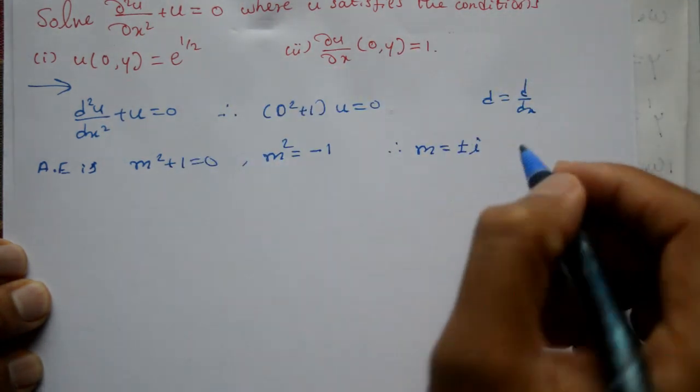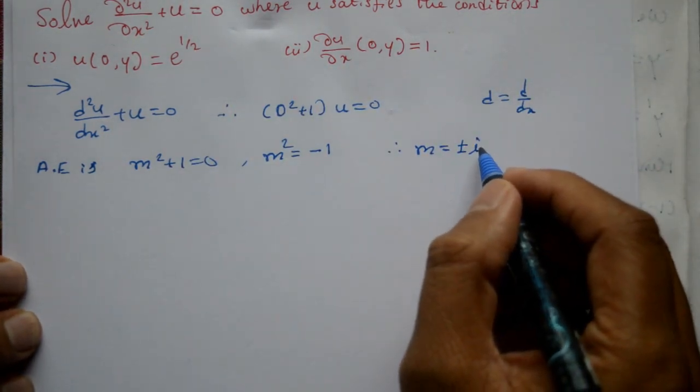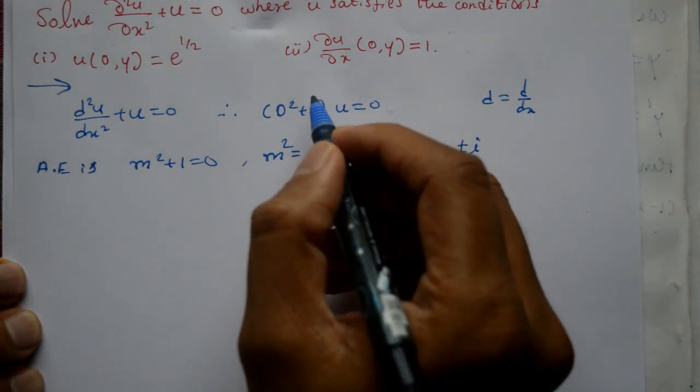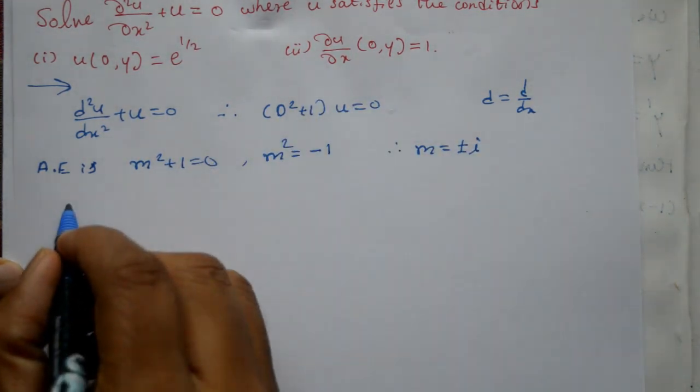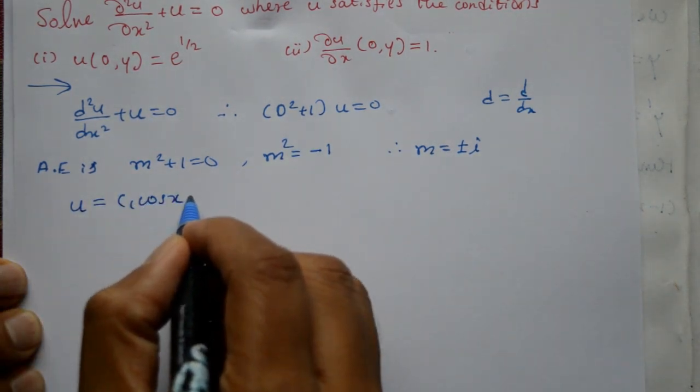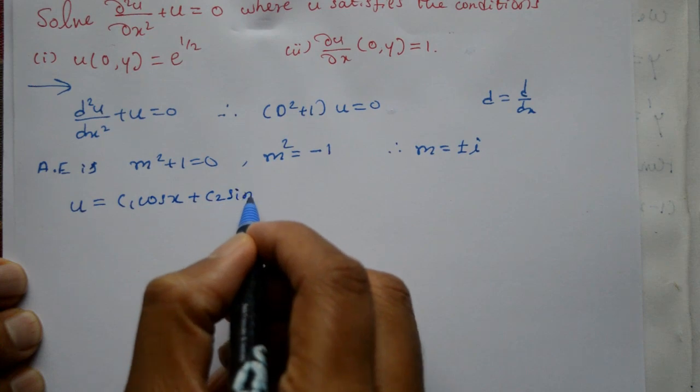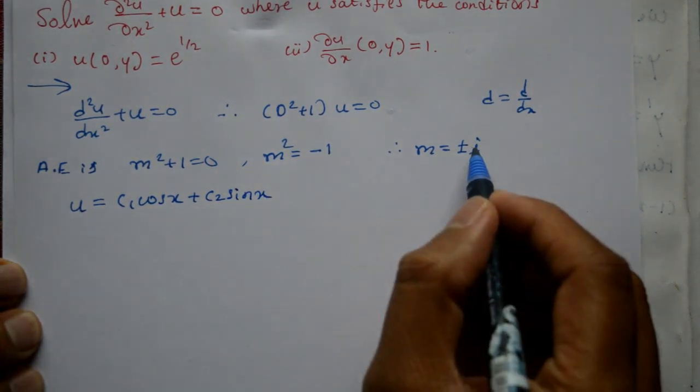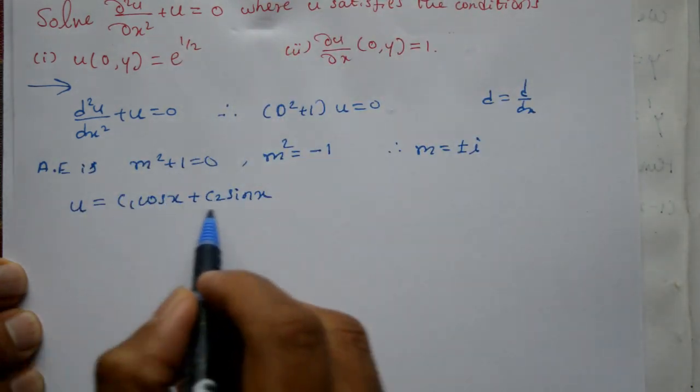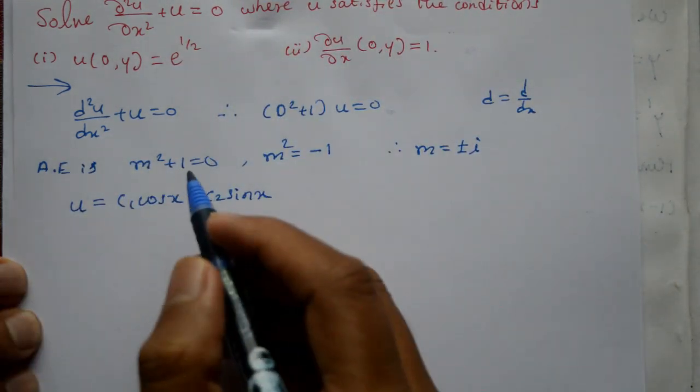√(-1) gives complex roots. Alpha is 0, beta is 1. The solution of ordinary differential equation is given by: u = c₁·cos(x) + c₂·sin(x), because beta is 1, alpha is 0, e^0 becomes 1.